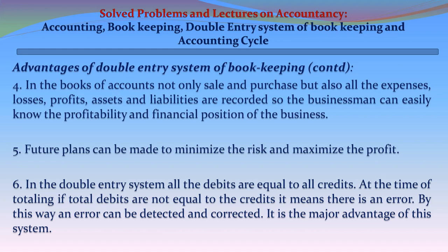5. Future plans can be made to minimize risk and maximize profit. 6. In the double-entry system, all debits are equal to all credits. If at the time of totalling, total debits are not equal to credits, it means there is an error. By this way, an error can be detected and corrected. This is the major advantage of this system.